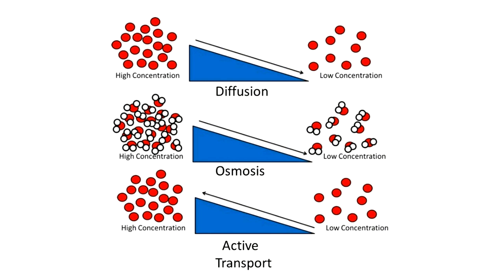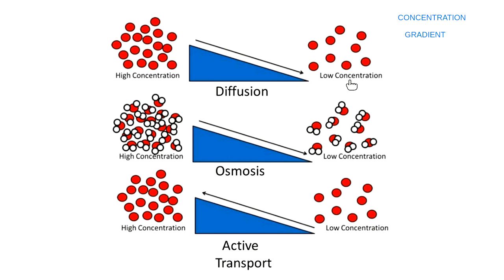This picture is on page four of your lesson outline. We're talking about the concentration gradient. The concentration gradient is the slope that shows me the difference between two different concentrations — a place that has a high concentration and a place that has a low concentration. When I compare how different those things are to each other, that gives me a slope.